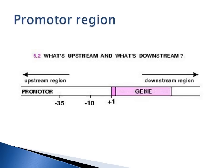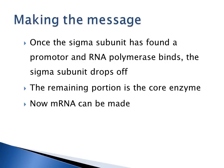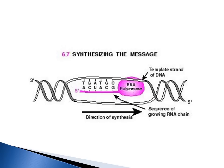The promoter region has your plus one (the very first nucleotide of the gene), then the minus 10 region and the minus 35 region, which carry the consensus sequences recognized by the sigma subunit of RNA polymerase. Once the sigma subunit finds the promoter and RNA polymerase binds, the sigma subunit drops off. The remaining portion of RNA polymerase — the core enzyme — is what makes the messenger RNA. RNA polymerase then comes in, binds, and the double helix unwinds into two separate strands, with the template strand serving as the basis for messenger RNA synthesis.